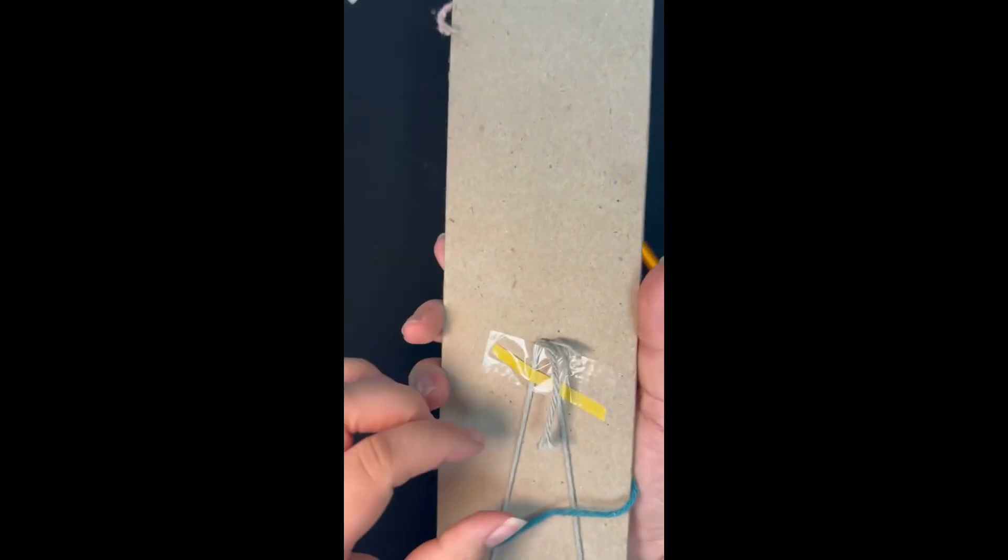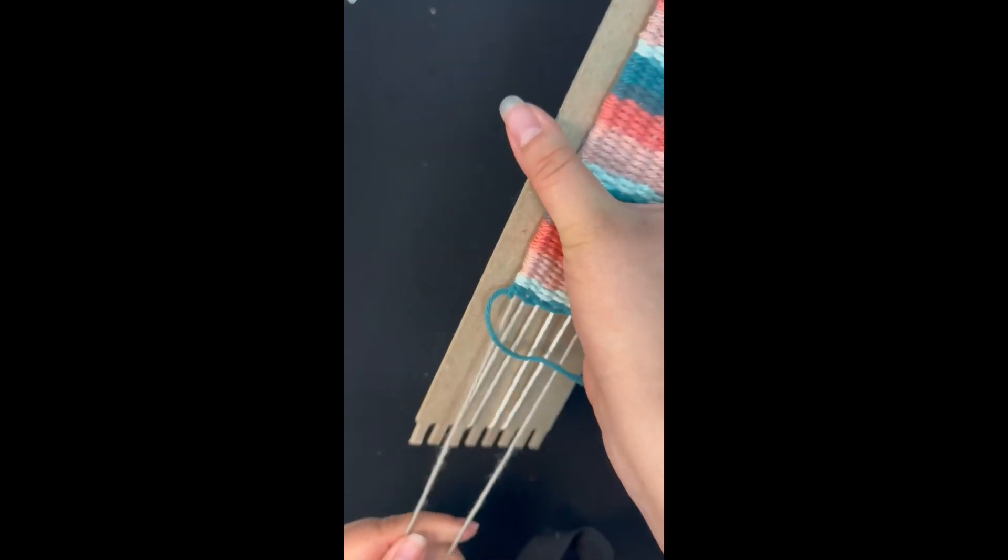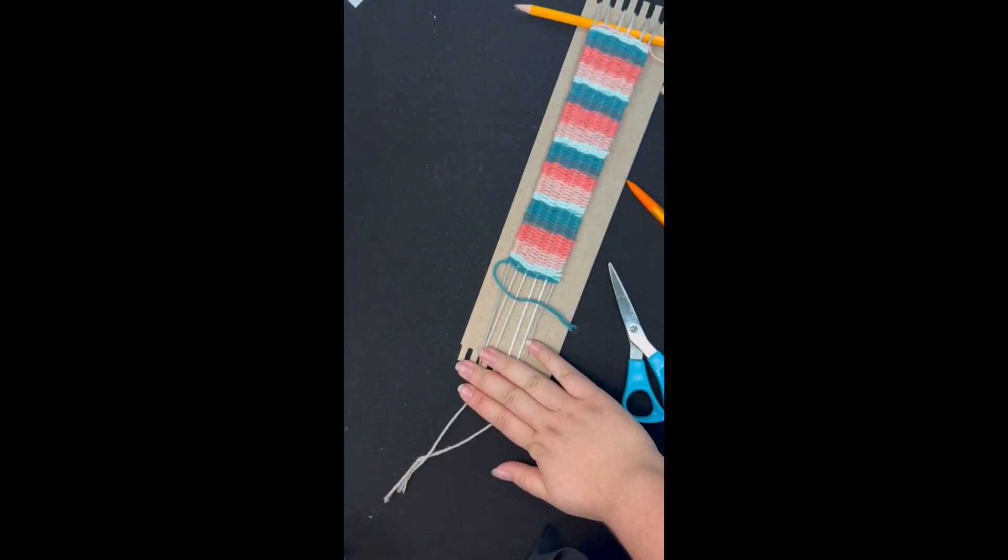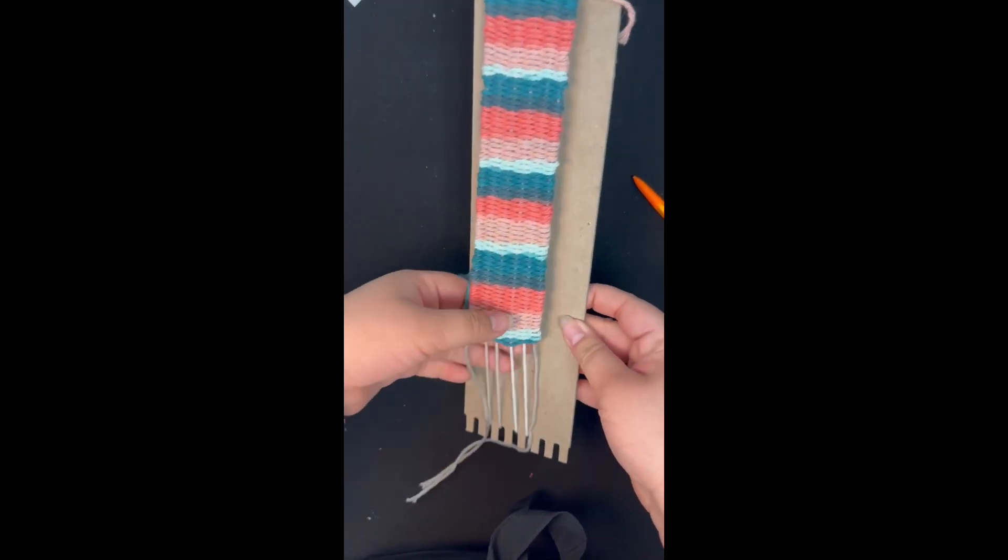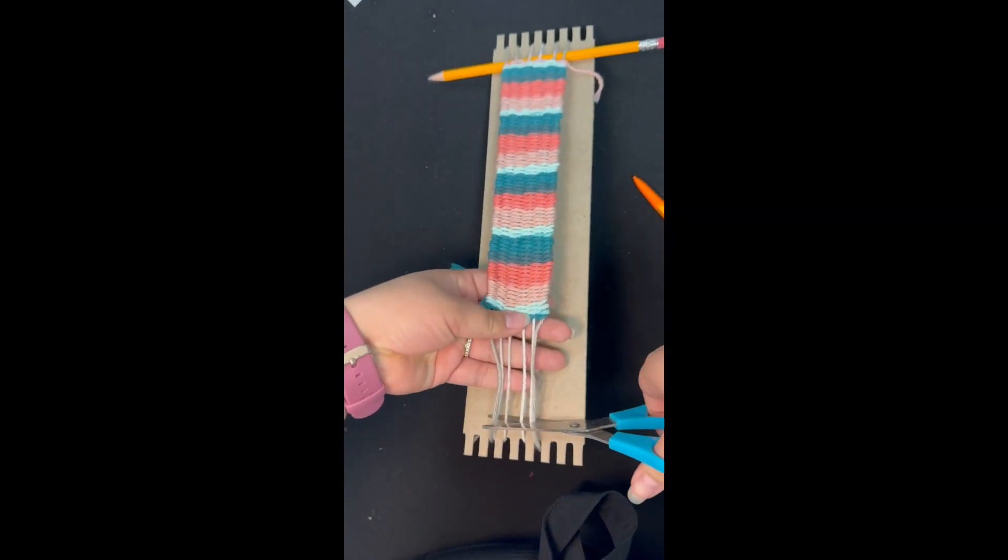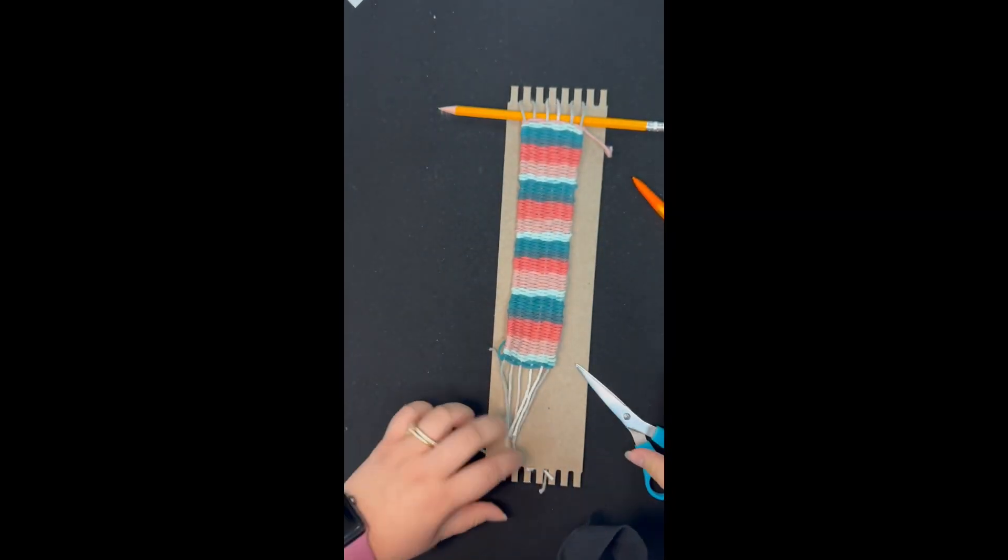At this point, you'll go ahead and remove the pencils and take the tape off the back. At the bottom, make sure that your yarn is tightened and then you're going to cut off those edges. Make sure you only do this on the bottom part of your bookmark.